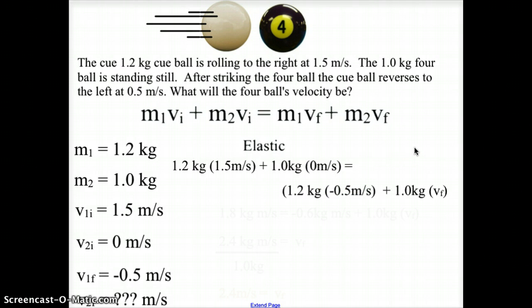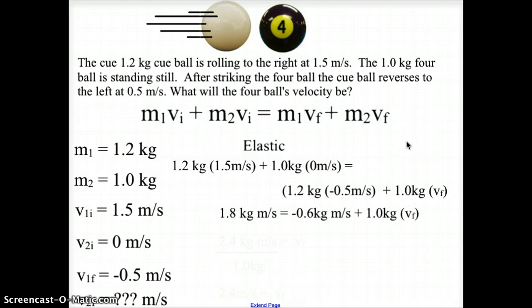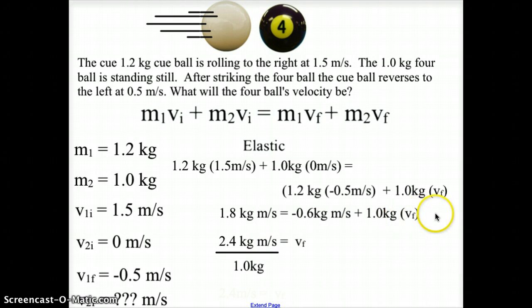Plugging in the values: 1.2 kg × 1.5 m/s + 1.0 kg × 0 m/s = 1.2 kg × (−0.5 m/s) + 1.0 kg × vf, because the cue ball goes to the left. Completing the math and continuing with the algebra, we end up with 2.4 kg·m/s ÷ 1.0 kg. Kilograms cancel, and our final velocity is 2.4 m/s, positive because the four ball will be going to the right.